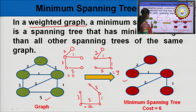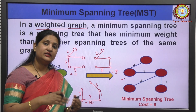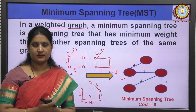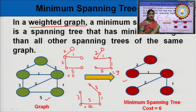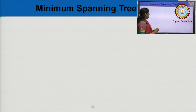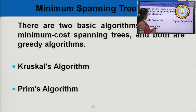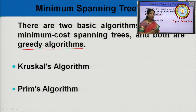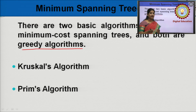So, among these spanning trees, the minimum spanning tree has the minimum cost. This graph has cost 11, this graph has cost 9, this graph has cost 12, and this spanning tree has cost 6. So it is the minimum spanning tree of the given graph. Generally, to find the minimum spanning tree, we can create all the possible spanning trees and pick the one with the least value. But it is a very time-consuming task. So, is there a greedy method to calculate the minimum spanning tree? Yes — there are two greedy methods: the Kruskal algorithm and the Prim's algorithm.